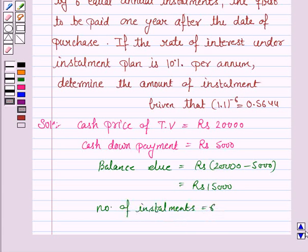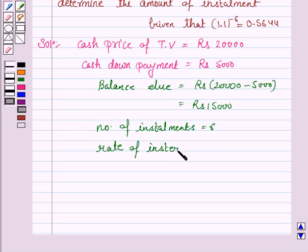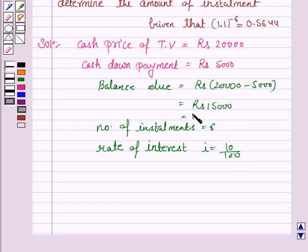The number of installments n is equal to six, and the rate of interest i is 10%, that is 10 by 100. The balance due becomes the principal P. Now, if R is the present value of the annuity...